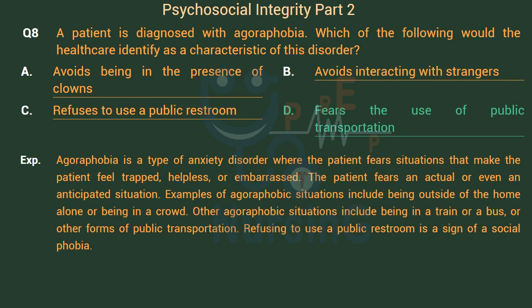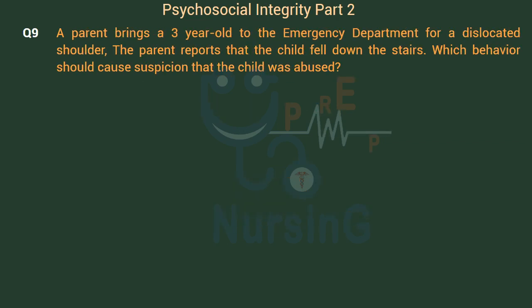Agoraphobia is a type of anxiety disorder where the patient fears situations that make the patient feel trapped, helpless, or embarrassed. The patient fears an actual or even an anticipated situation. Examples of agoraphobic situations include being outside of the home alone, being in a crowd, or being in a train, bus, or other forms of public transportation. Refusing to use a public restroom is a sign of a social phobia.